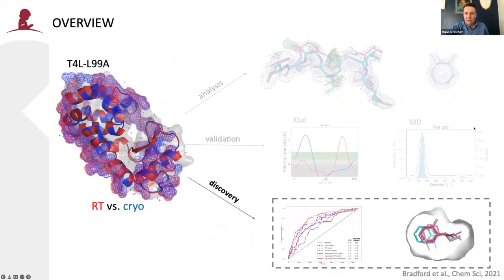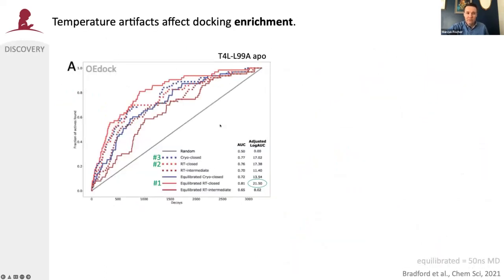That leads me to the final vignette: what impact does temperature have on ligand discovery? Looking at enrichment — essentially an area-under-the-curve estimation of how well we can find ligands among non-ligands — we ran this on the APO structure. At cryo we saw only one conformation; at room temperature we saw two. Adding an equilibration step to relax the structure, the best-performing structure was the equilibrated room temperature structure, followed by the room temperature closed conformation, and then the cryo structure.